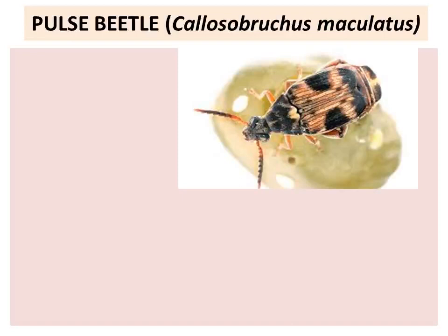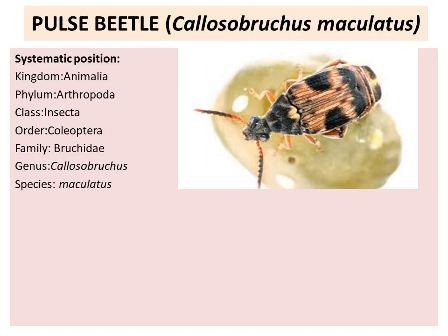The first pest in this list is Callosobruchus maculatus. Regarding its systematic position: kingdom Animalia, phylum Arthropoda, class Insecta, order Coleoptera (that is beetles), family Bruchidae, genus Callosobruchus, species maculatus.